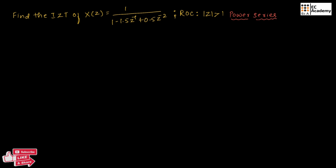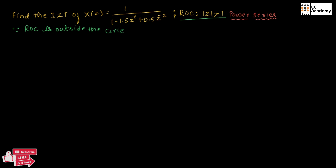In this problem, the ROC is magnitude of Z is greater than 1. Since the ROC is outside the circle of radius 1 in the Z plane, X of N must be a right-sided sequence.